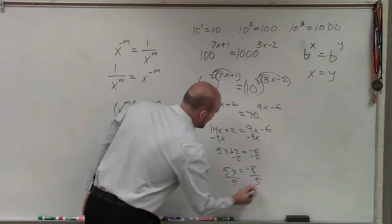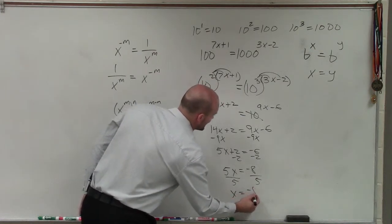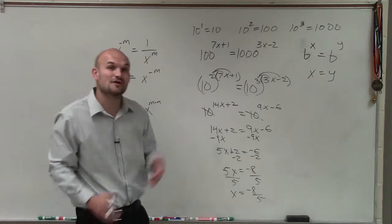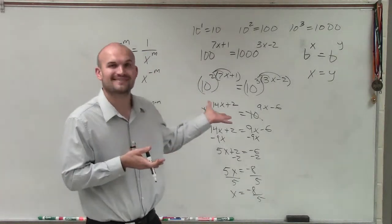Divide by 5, x equals negative 8 fifths. So there you go, ladies and gentlemen. That is how you solve an exponential equation using 1 to 1 properties. Thanks.